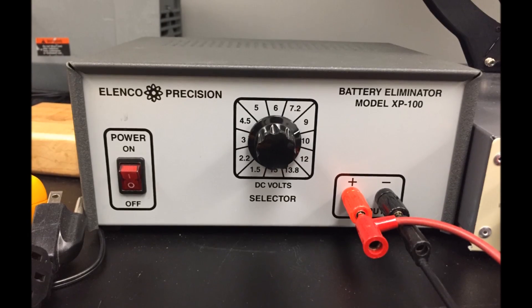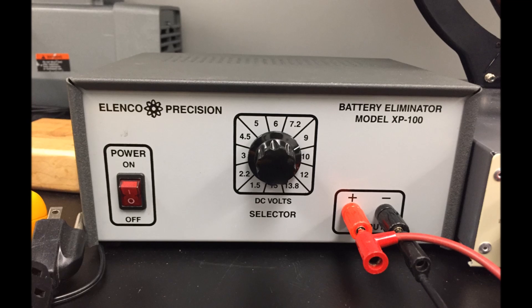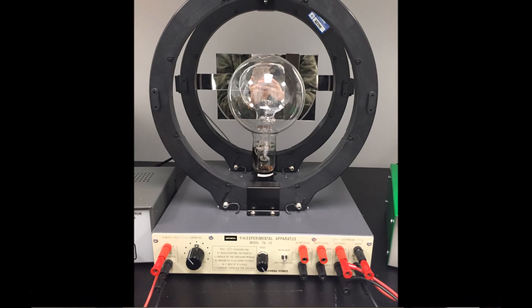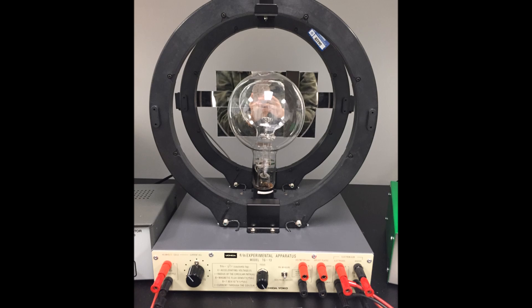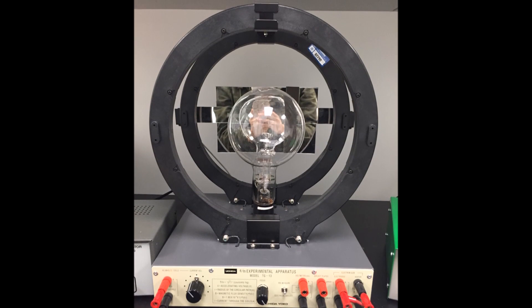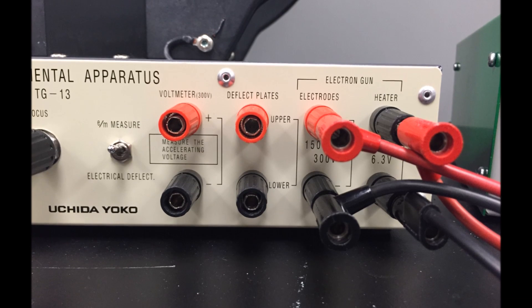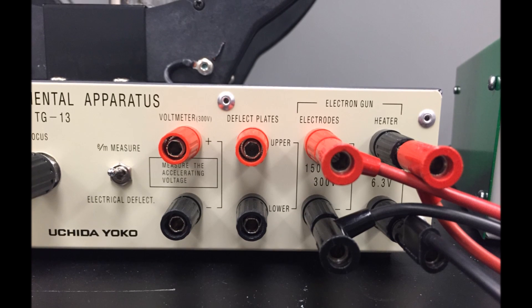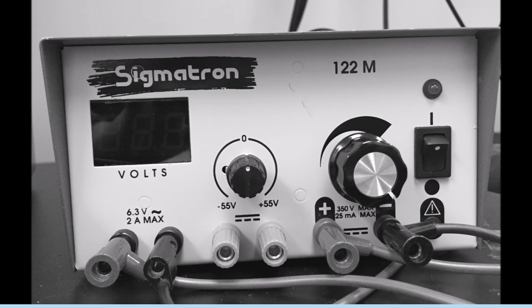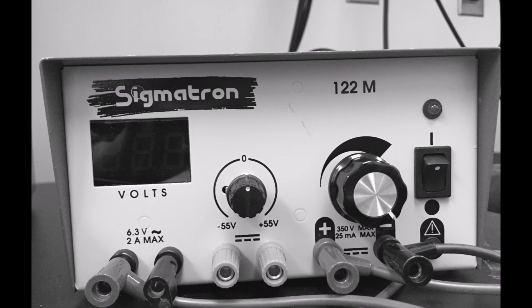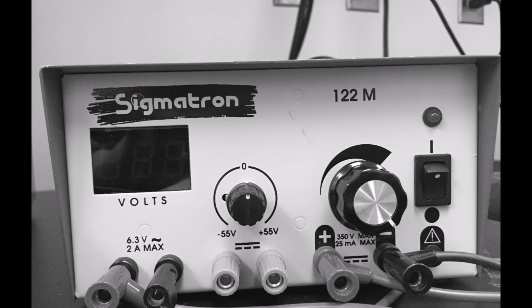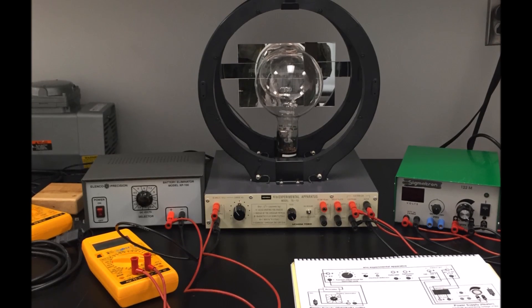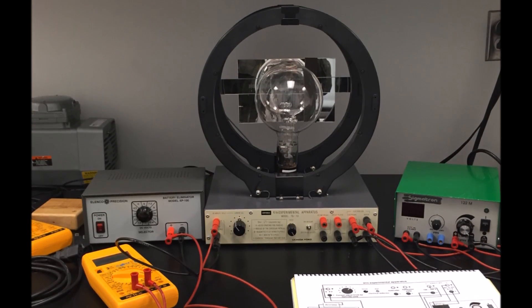This is how your power supply should look like after it's been connected. This is how your E&M Apparatus should look like — here's a closer look, so you can see the 150 to 300 volts and the 6.3 volts. And here is how your heater should look like. Now you're ready to conduct your experiment, and this is how your overall setup should look like.